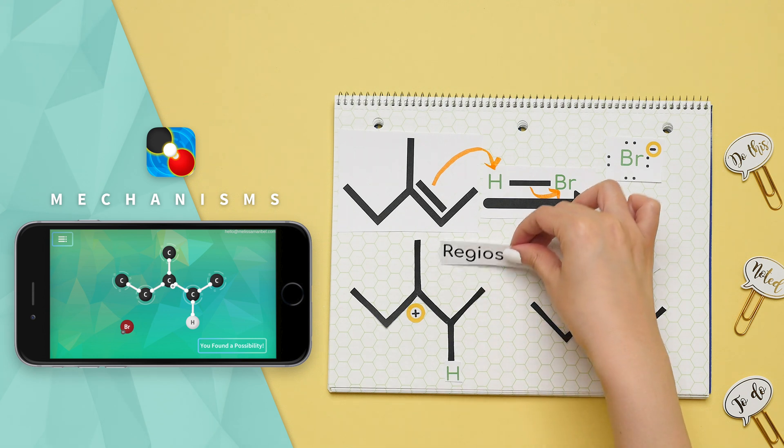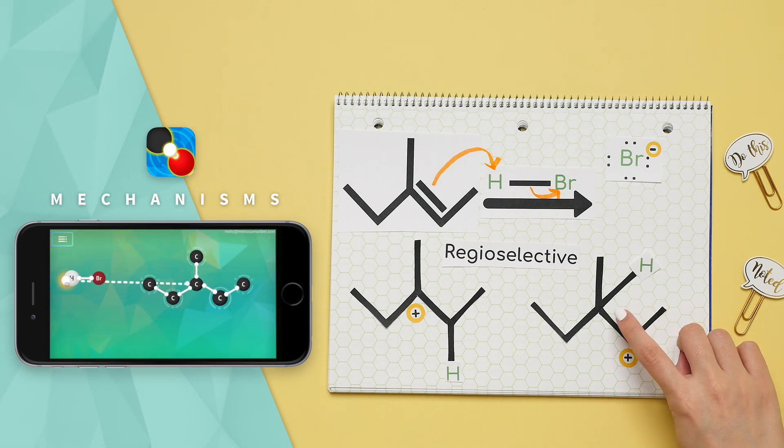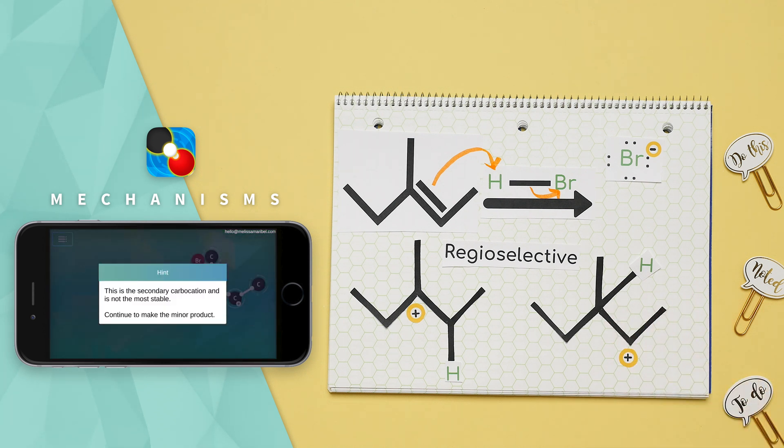This is known as being regioselective, meaning the hydrogen is selective or just picky as to which carbon it attaches to. If we were to have the hydrogen go to this first carbon it would be wrong and thankfully the mechanisms app can help you avoid that mistake thanks to their hint feature.